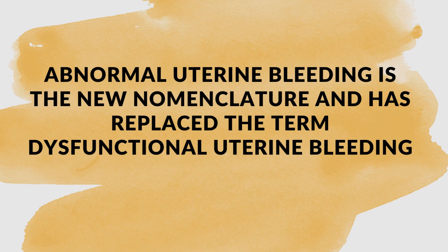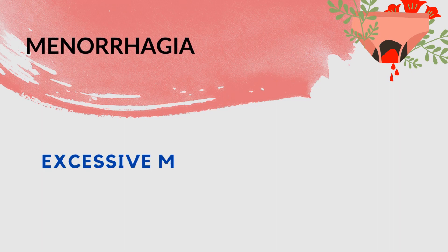Abnormal uterine bleeding is the new nomenclature, replacing the older term dysfunctional uterine bleeding, in women of reproductive age in the absence of pregnancy.